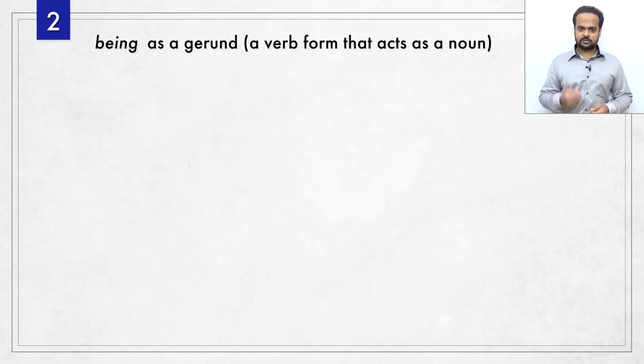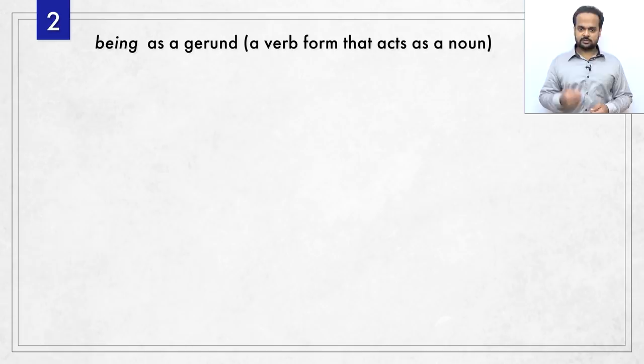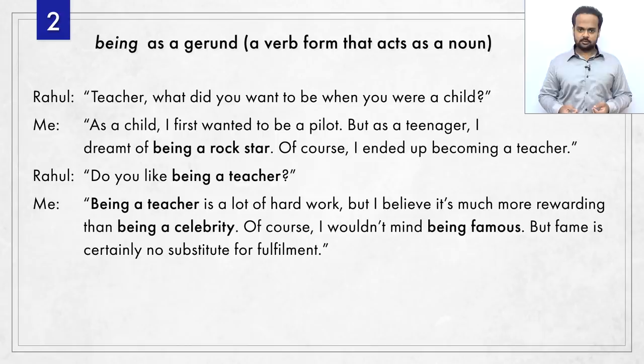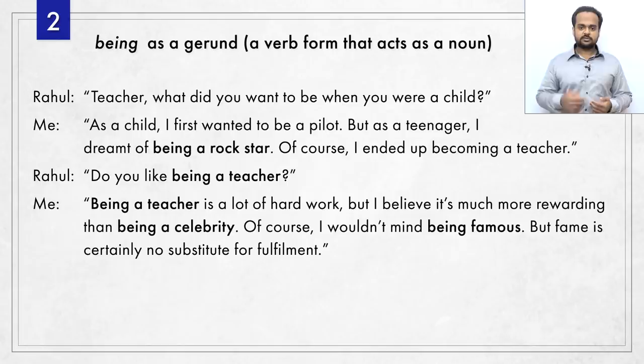The second use of being is as a gerund — that means a verb form that acts as a noun. Here's a conversation I had recently with a young student of mine named Rahul. Rahul asked: teacher, what did you want to be when you were a child? I said: as a child, I first wanted to be a pilot, but as a teenager, I dreamt of being a rock star. Rock star means a famous singer of rock music. Of course, I ended up becoming a teacher. Ended up means that's what finally happened.